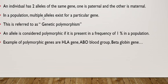Usually, due to the presence of multiple alleles for a particular gene, this is referred to as genetic polymorphism. When we talk about genetic polymorphism, we mean the existence of multiple alleles for a particular gene. We consider an allele as polymorphic if it is present in the population in a frequency of one percent or more — then this allele is called a polymorphic allele.